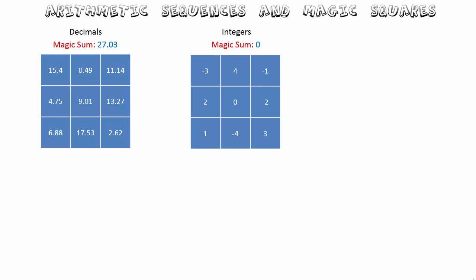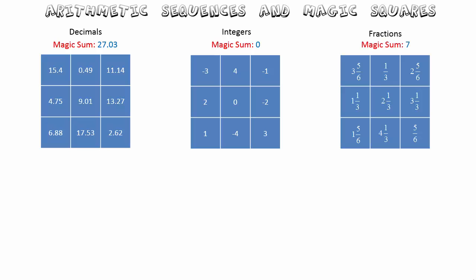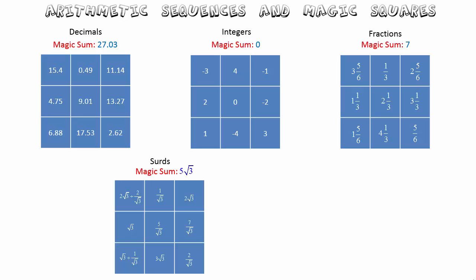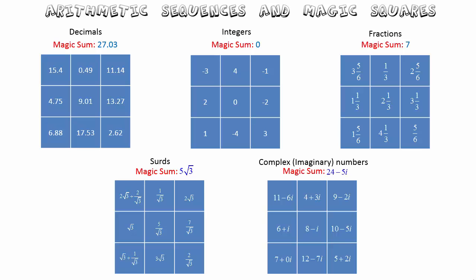We don't need to use whole numbers to create a magic square, even though it's easier to do so. Here's an example using decimals — again an order-three magic square. We might use integers (positive and negative whole numbers), in which case the magic sum is zero. Fractions also work, giving a magic sum of seven-thirds. Irrational numbers give a magic sum of five root three, and complex or imaginary numbers give a magic sum of twenty-four minus five i. So we can have magic squares using all our number systems, but we will focus on positive whole numbers forming an arithmetic sequence.